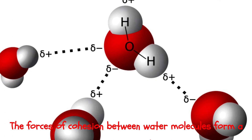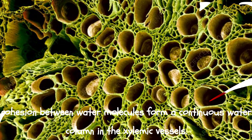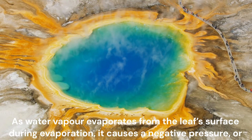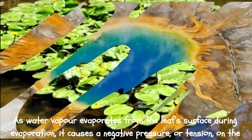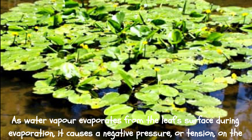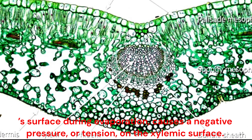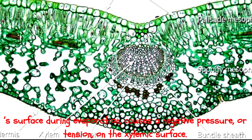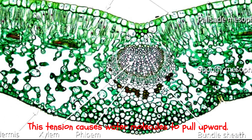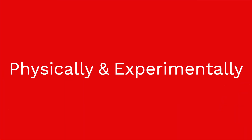The forces of cohesion between water molecules form a continuous water column in the xylem vessels. As water vapor evaporates from the leaf's surface during evaporation, it causes negative pressure or tension on the xylem surface. This tension causes water molecules to pull upward. This theory is accepted and proved both physically and experimentally.